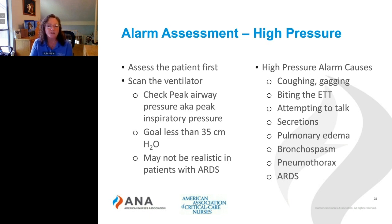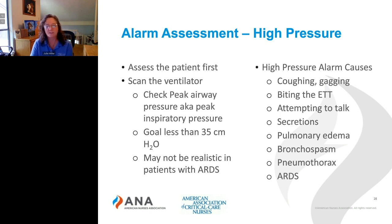Ask your ICU nurses or RTs to help you know where to assess peak pressure. Some causes of high pressure are as simple as coughing or gagging — that can trigger a high pressure alarm and then reset itself. If a patient is biting the ET tube, they may be agitated or in pain, and may need analgesia or sedation. If they're attempting to talk, it can also trigger a high pressure alarm.